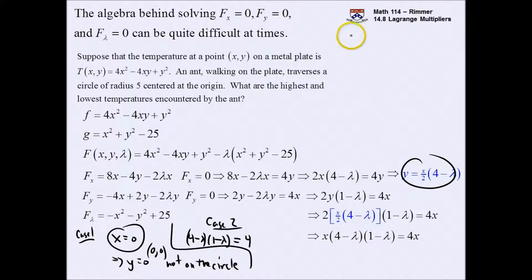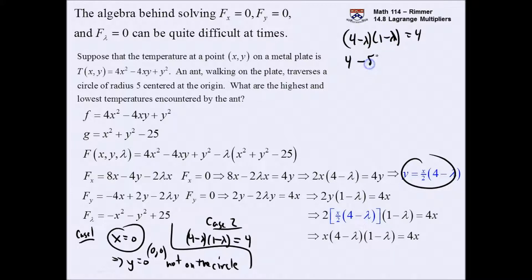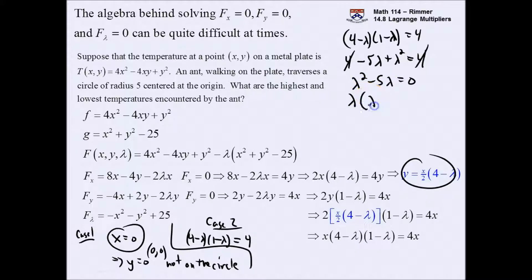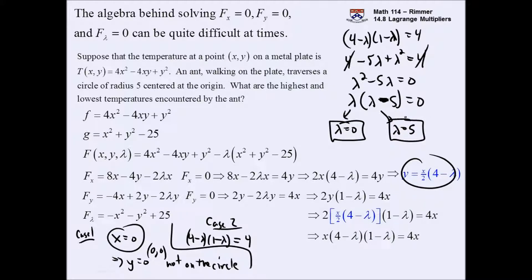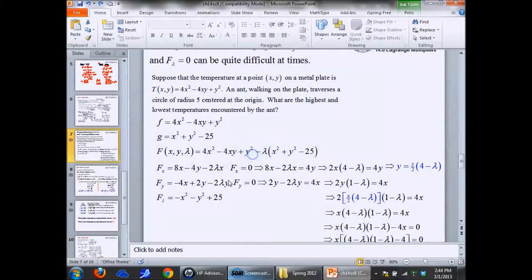Let's multiply out (4 - λ)(1 - λ): that gives 4 - 5λ + λ² = 4. Don't think this means either factor equals 4 - remember that only works for zero. Conveniently the fours cancel, leaving λ² - 5λ = 0, so either λ = 0 or λ = 5.